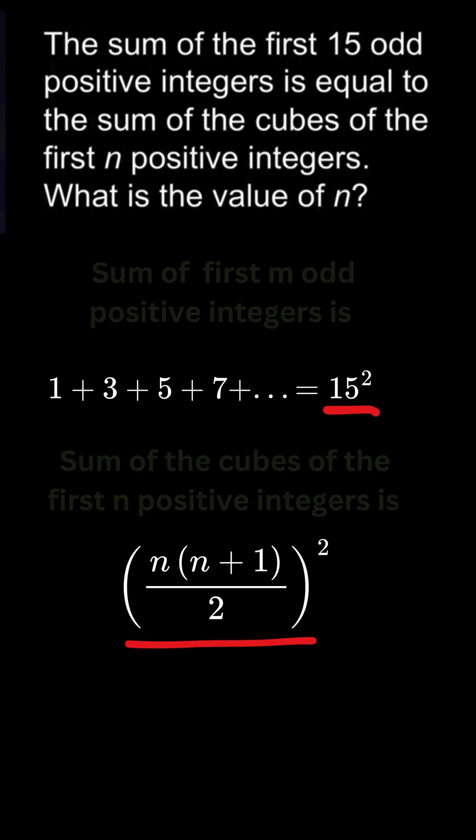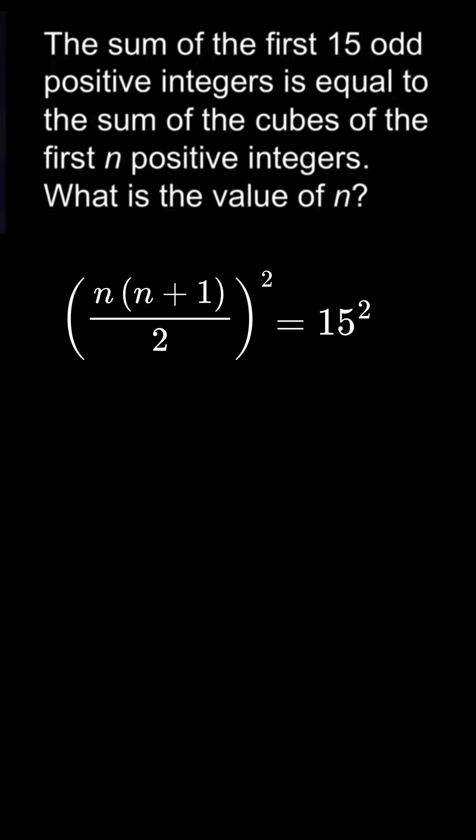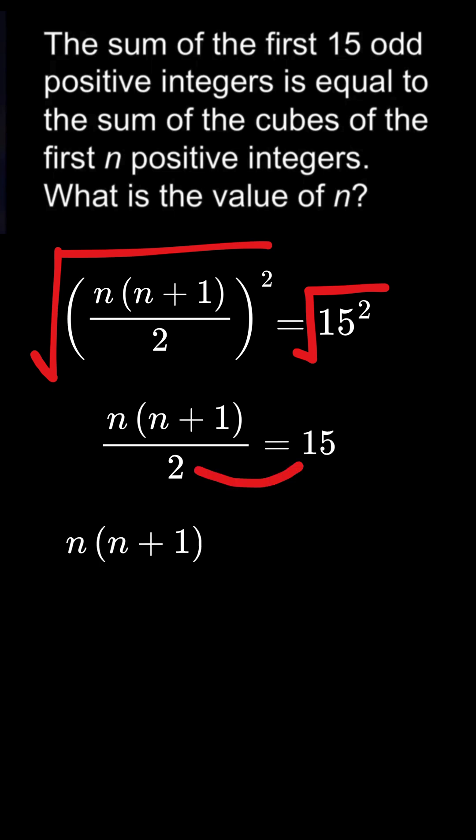If we equate both of them, we get 15 square equals this. So if we take square roots on both sides, we get 15 equals n times n plus 1 by 2, or n times n plus 1 equals 30.